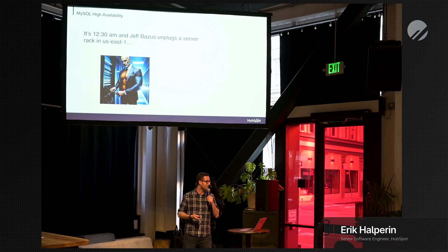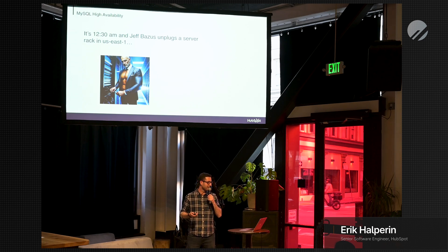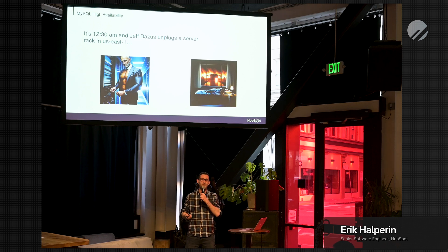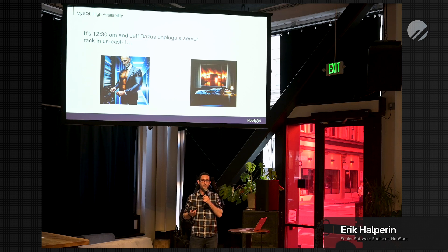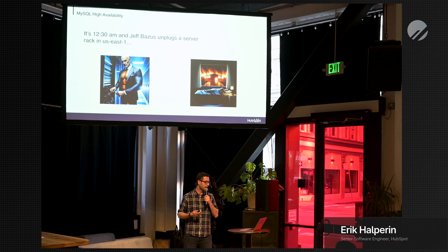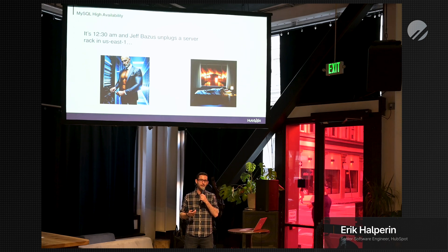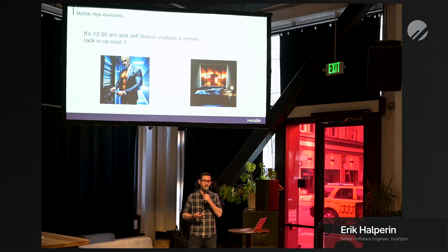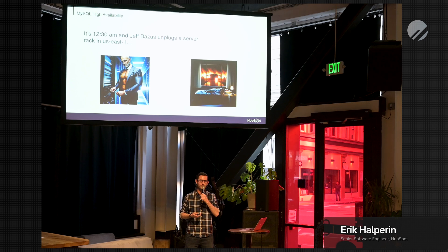So it's 12:30 a.m. and someone unplugs the server, and luckily you sleep through the night because of HA — the database does not go down and you don't get paged. For HubSpot, and I'm sure many of you, our stuff exists in the cloud and things are constantly failing. We can't expect 100% uptime. Even though Amazon might promise 99.99% uptime, instances sometimes fail more often than that and the AWS reps refuse to tell us why. So you need to be resilient to failure.